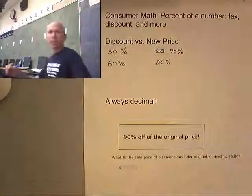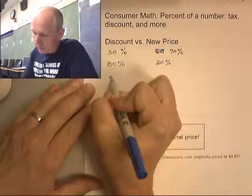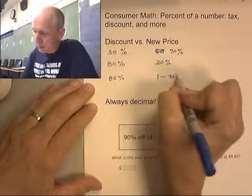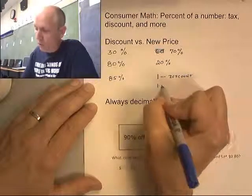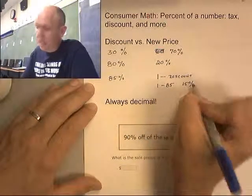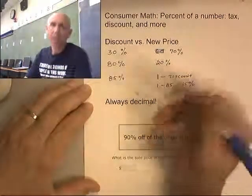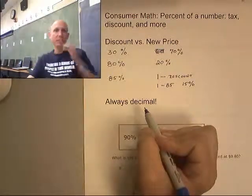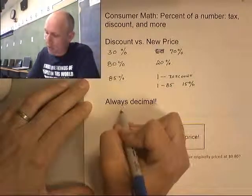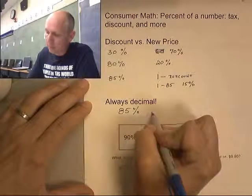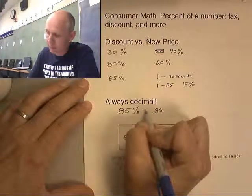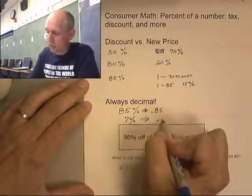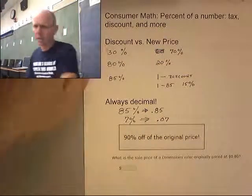We can think about this: the discount is the percent, so 85%, and the new price is 1 minus the discount, which in this case would be 1 minus 85%, which is 15%. So 1 minus the discount gives us the new price. Remember, we'll always be working with the decimal version — so 85% would really be 0.85, and 7% would really be 0.07.